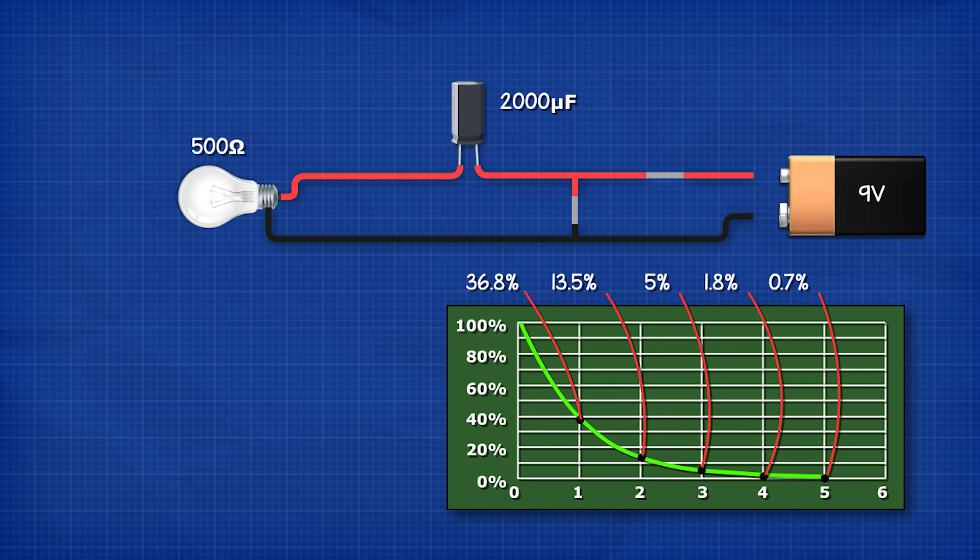For example if we had a 9 volt battery, a lamp with a resistance of 500 ohms and a 2000 microfarad capacitor. Our time constant would be 500 ohms multiplied by 0.002 farads which is one second.